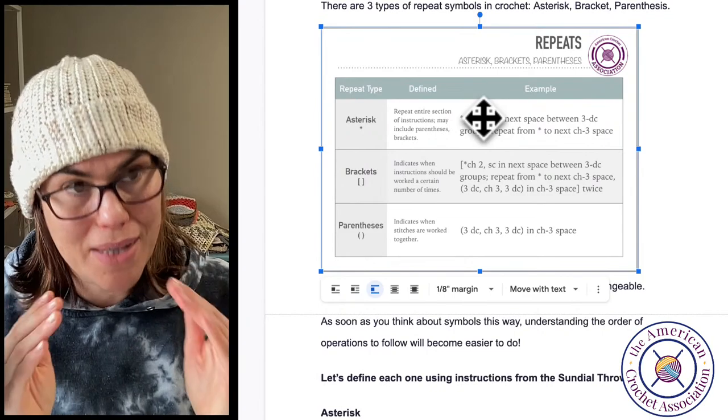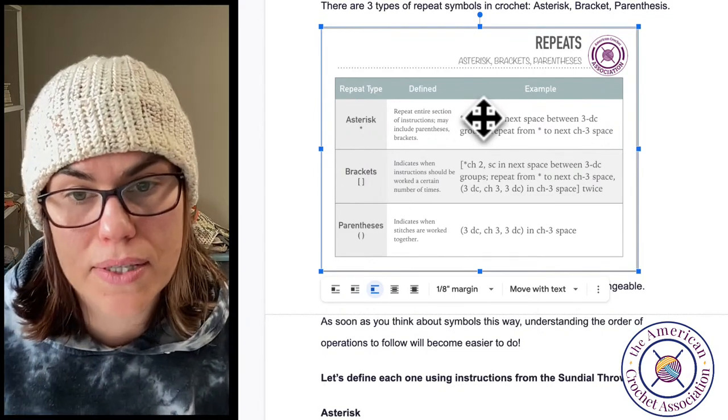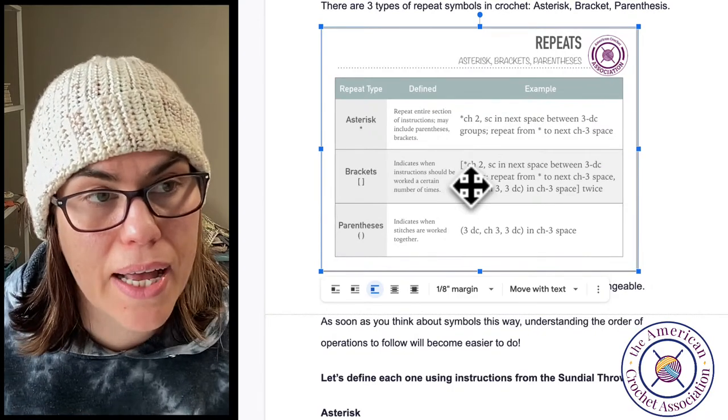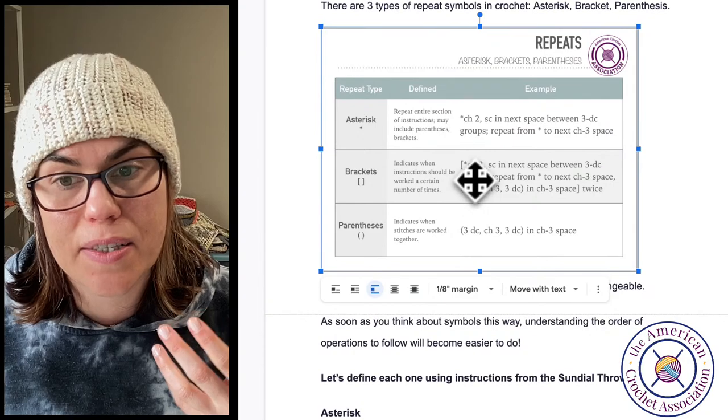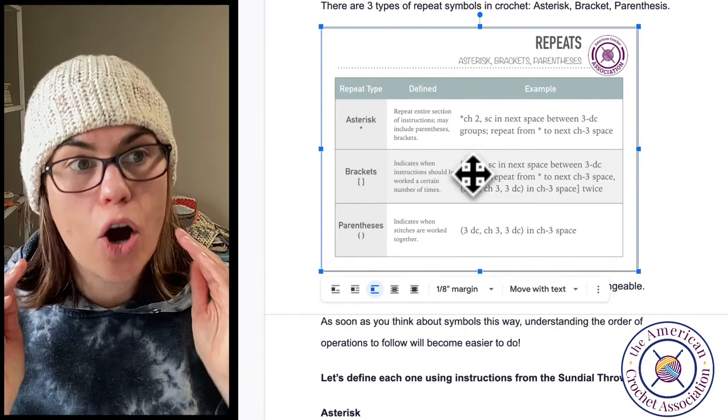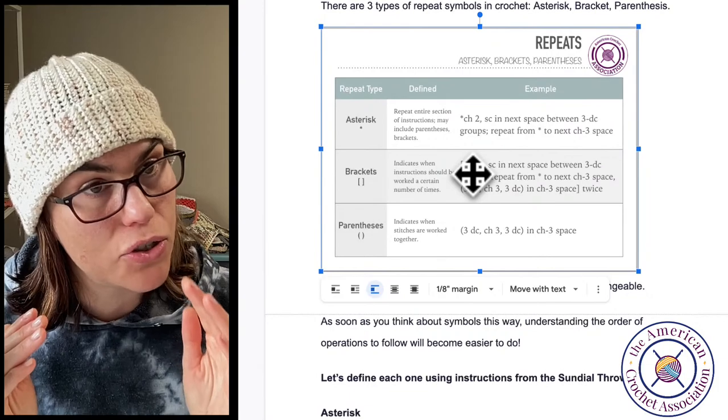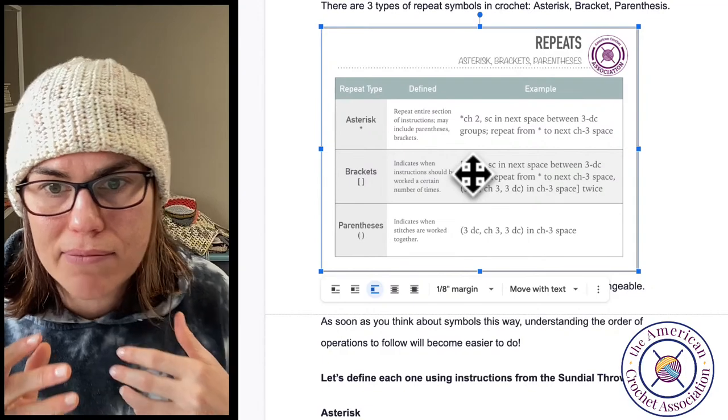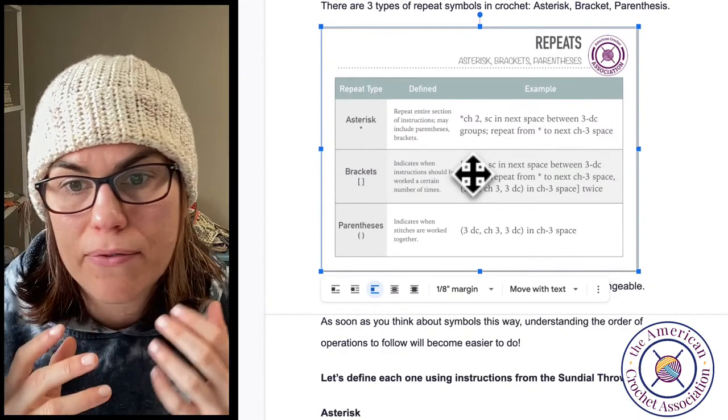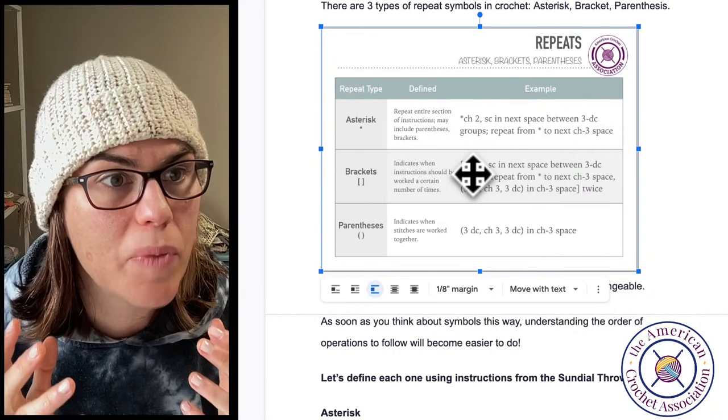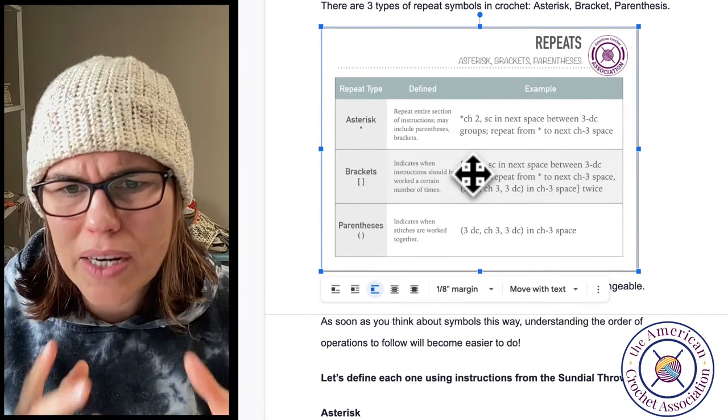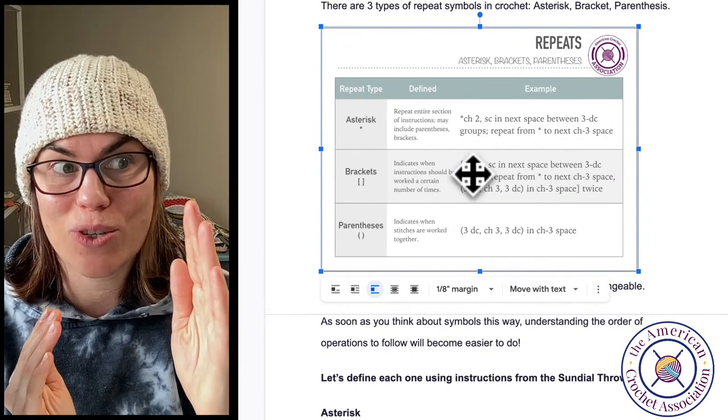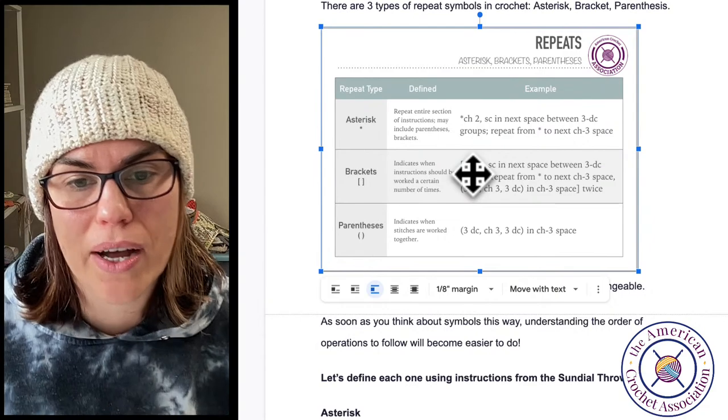A bracket is going to indicate when instructions should be worked a certain number of times. So this is where it's different than the parentheses because a bracket is going to be over maybe a longer piece of instruction. So asterisk, chain two, single crochet, next space between three double crochet groups, repeat from asterisk to next chain three space. There's a lot of stuff in there. Three double crochet, chain three, three double crochet into chain three space, bracket to bracket, do that twice. See, there's a lot of stuff going on in there.